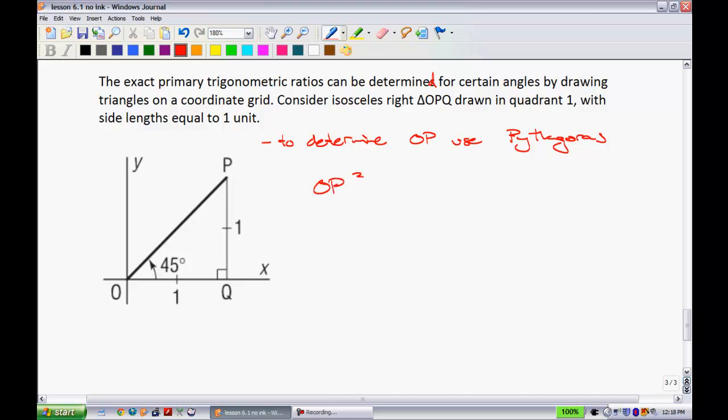For instance, if you take OP squared, we know that it's going to be equal to my two legs, one squared plus one squared. And then we have OP squared is equal to just one plus one gives me two. In order to get OP by myself, I just need to take the square root to both sides, so we get root two.